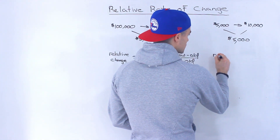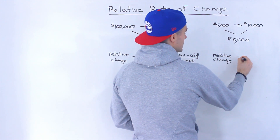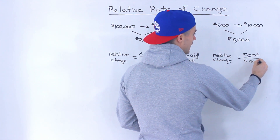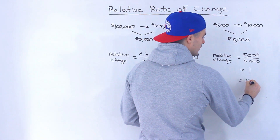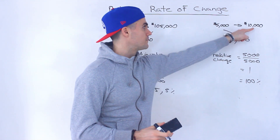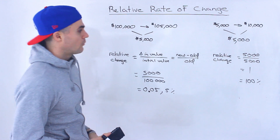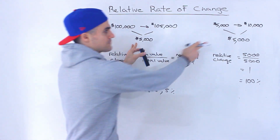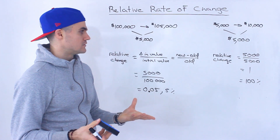Now for the second company, the relative change: the change is $5,000 and the initial is also $5,000, so you end up getting 1. If you want the percent change, you multiply by 100, which gives you 100% change — it basically doubled in revenue. Versus the first company which only went up by 5%. So a lot of times, instead of the absolute change, you get a better perspective on what's going on when you look at the relative change.